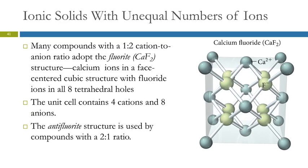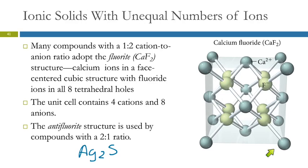If you have the reverse — a two-to-one ratio with two cations to one anion, such as silver sulfide — the structure is very similar to fluorite but with the cations and anions swapping places. This is called the anti-fluorite structure.